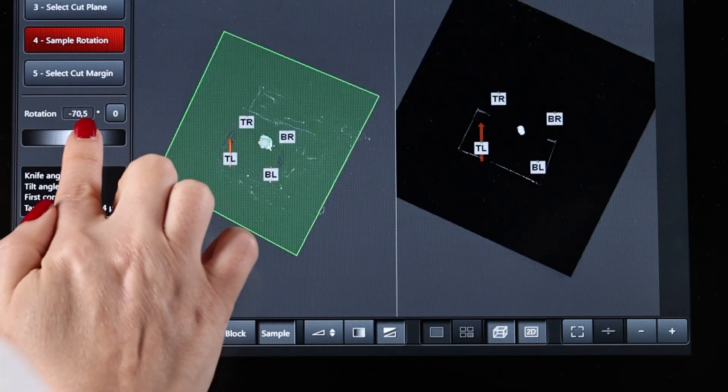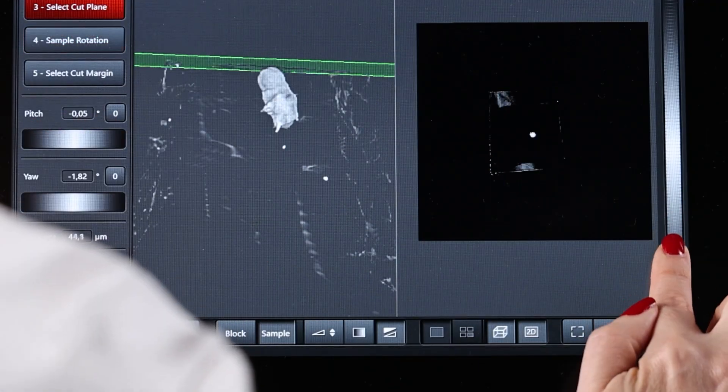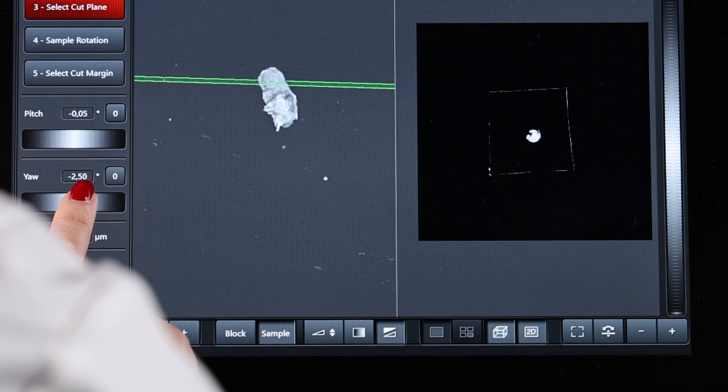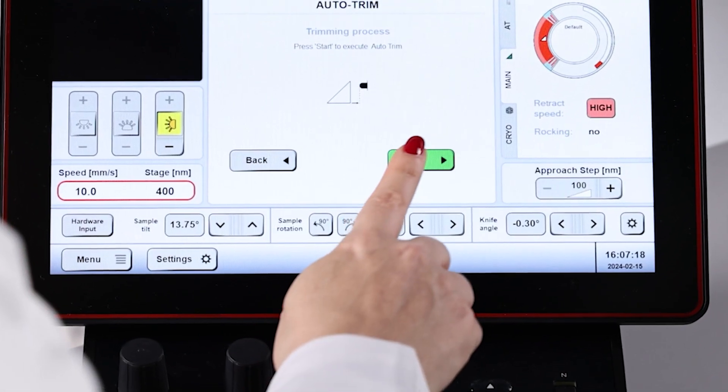Are you looking for distinct features in your sample? Simply upload your MicroCT data on your UC Inuity and fully automate your 3D trimming process. You will get to your buried target fast and with precision.